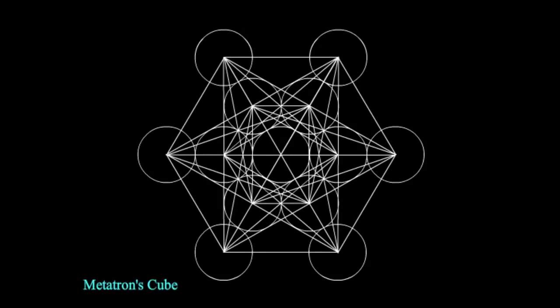Metatron's cube could be considered the ultimate masculine aspect of structural reality, where the female counterpart would be the fruit of life as we've seen before. Again, this is example of a masculine form being born from a female form, just from a higher perspective.